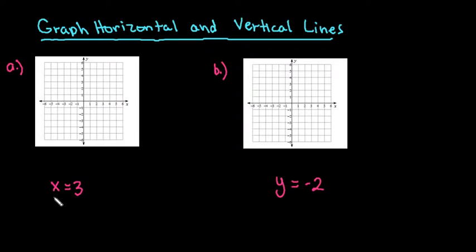An example of a vertical line is this one, x equals 3. So any time you have just x equals a constant, you're going to end up with a vertical line.